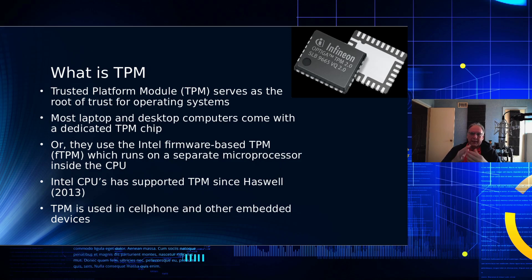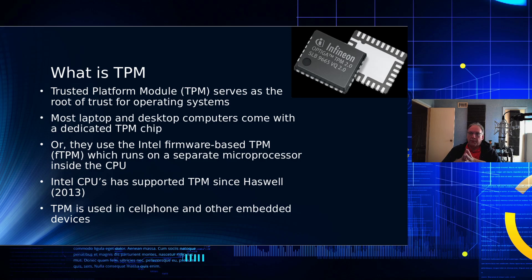Taking a step back — what is TPM? It serves as the root of trust for computer systems. Most laptops and desktop computers come with a dedicated TPM chip today, or they use the Intel firmware-based TPM, which runs on a separate micro-coprocessor inside the CPU. Those have been around since Intel's Haswell, so since 2013. TPM2 is where the problem was found in those early processors. TPM is also found in your cell phone and in embedded devices. It's used by Chromebooks, and AMD Ryzen Pro includes a TPM inside the CPU.